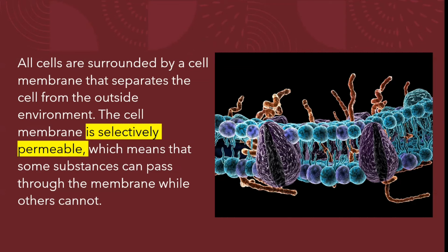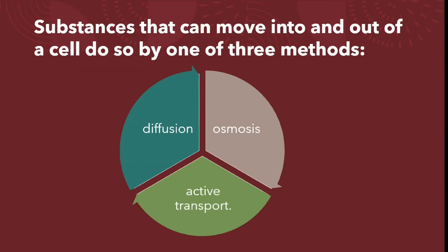The cell membrane is selectively permeable, which means that some substances can pass through the membrane while others cannot. Substances that can move into and out of a cell do so by one of three methods: diffusion, osmosis, or active transport.